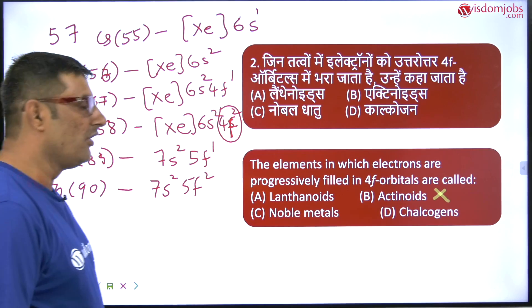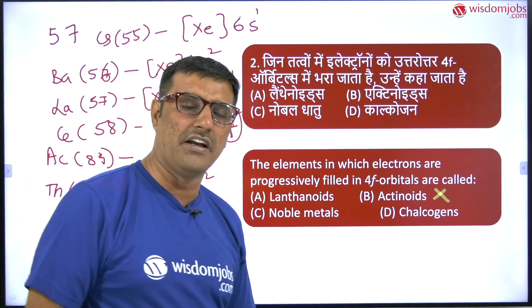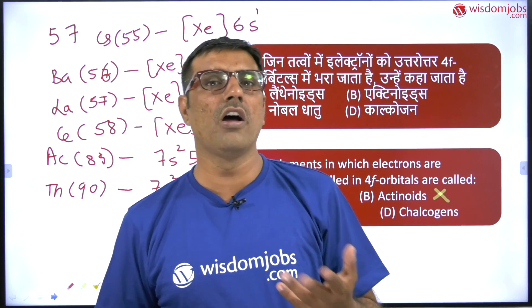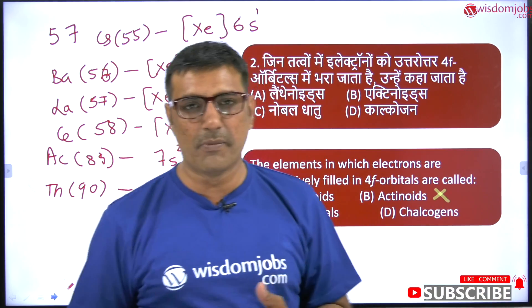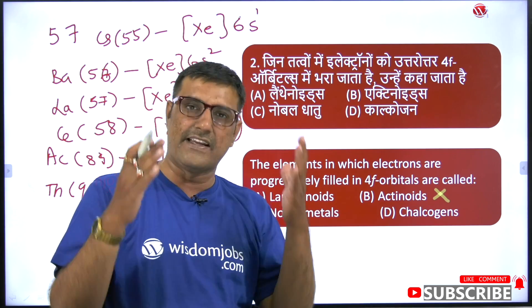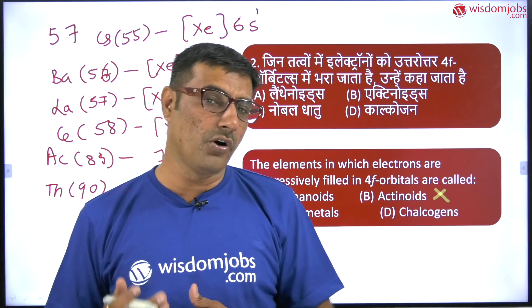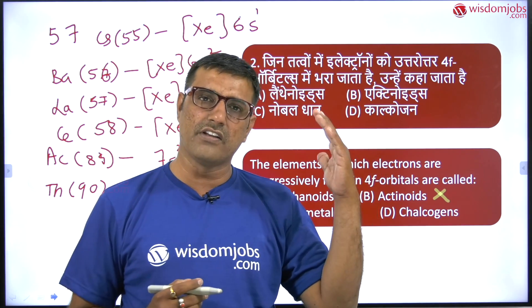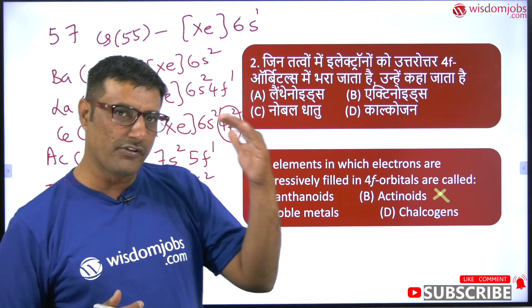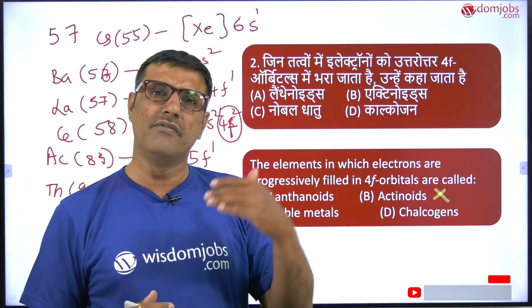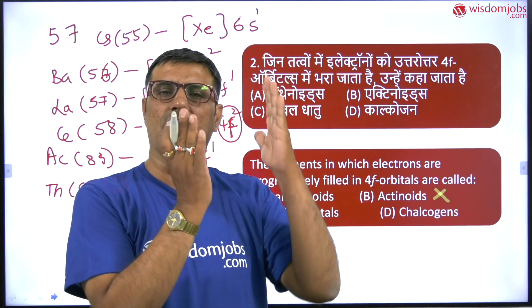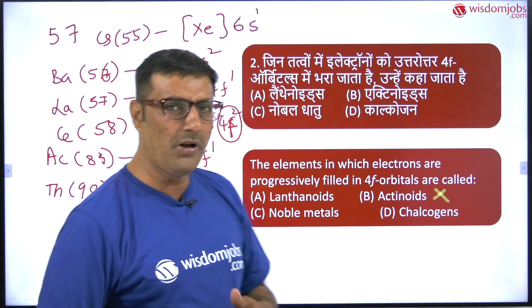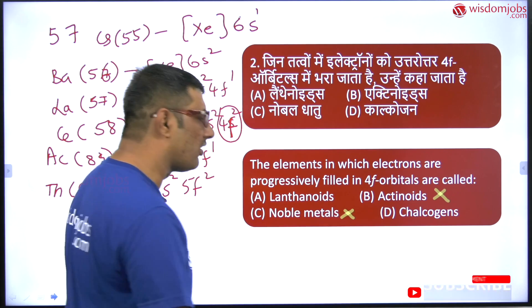Next, noble metals: any unreactive metal is called a noble metal, for example gold, silver, osmium, rhodium, platinum. There are about 8 to 9 noble metals in the periodic table which are very unreactive. Silver has atomic number 47 and gold has atomic number 79, so the 4f orbital need not be filled by all noble metals. So noble metals is also a wrong option.